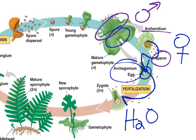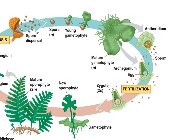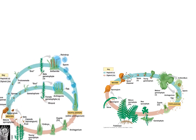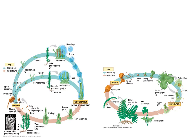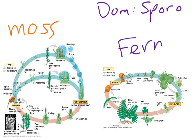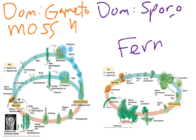Some major differences, if we wanted to talk about differences between the moss life cycle and the fern: here we have the moss life cycle, and here we have the fern. Some things about the fern is the dominant generation is going to be the sporophyte. In the moss, the dominant generation is going to be the gametophyte — which of course is haploid — and the sporophyte is diploid.